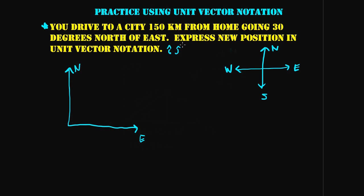We're going 30 degrees north of east, so the vector is at 30 degrees north of east, and the total distance we're traveling is 150 kilometers. We need to describe that in unit vector notation. From the vector component video, we know this vector is just the sum of its x-component vector and its y-component vector.